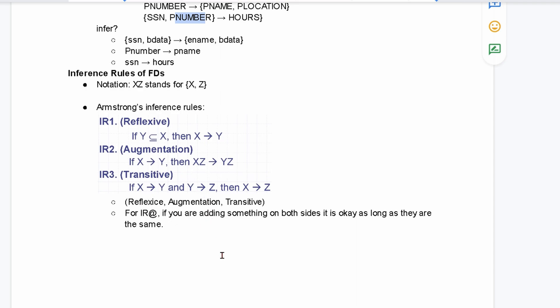Transitive. Well, if we have X going to Y, and we have our Y going to Z, that means our X can go from X to Z. This is reflexive, augmentation, and transitive.